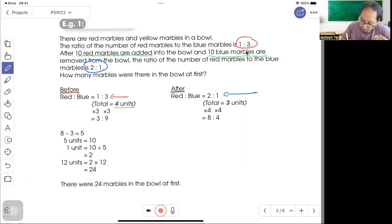Total is 4 units, total is 3 units. You need to make it the same, so times 3 to get total 12 units, and here times 4 total 12 units. Then 8 minus 3 is 5 units. So 5 units is 10 marbles, 1 unit will be 2.